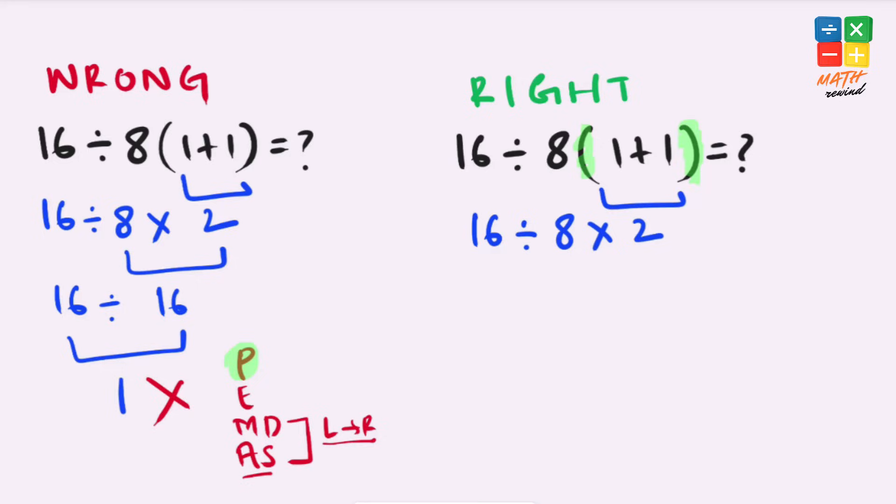Now if you notice, we have division and multiplication in this equation. Multiplication and division both have the same priority, but you must work from left to right, which means you cannot solve multiplication first. You have to solve the division.